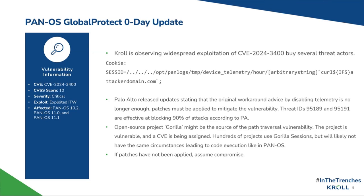Palo Alto released updates saying that the original workaround advice — disabling the telemetry service — was not sufficient to protect the device. Although we haven't seen exploitation directly using a different exploit path yet, it is possible to exploit this vulnerability without using the device telemetry path and relying on that service.